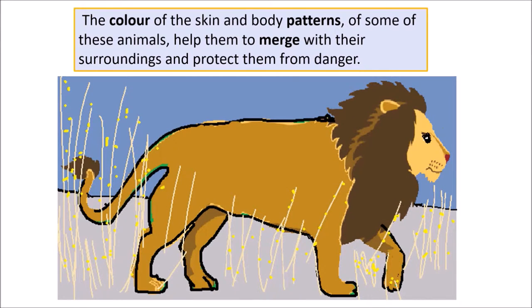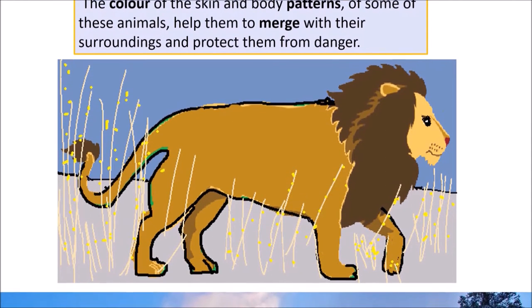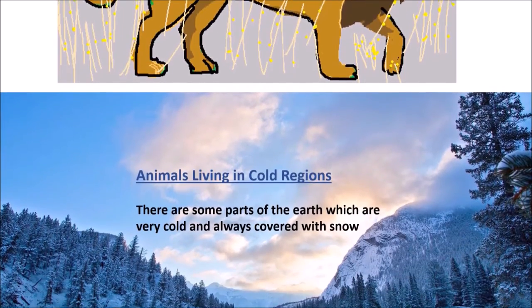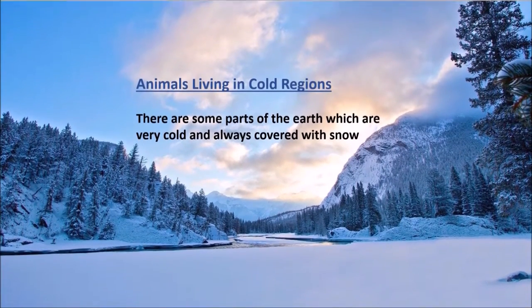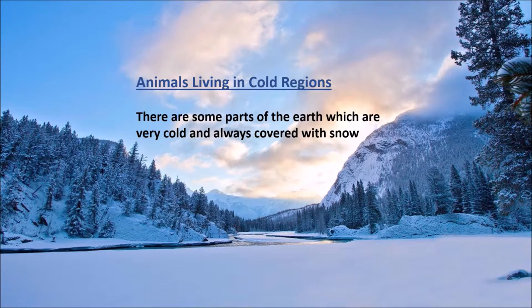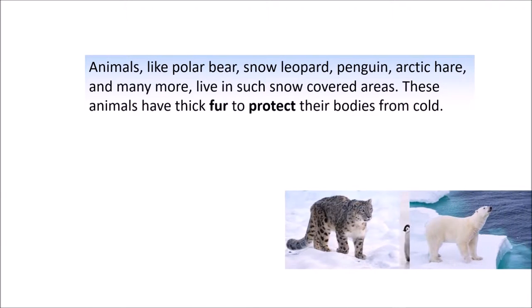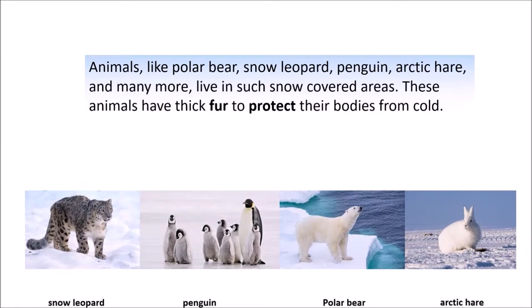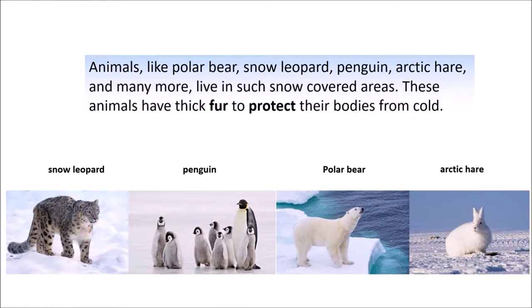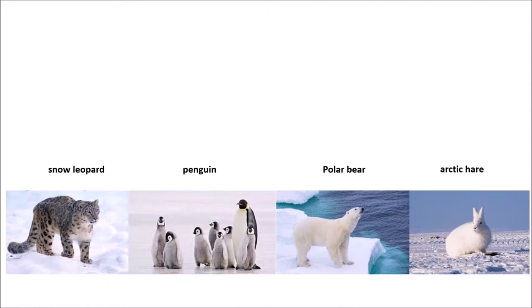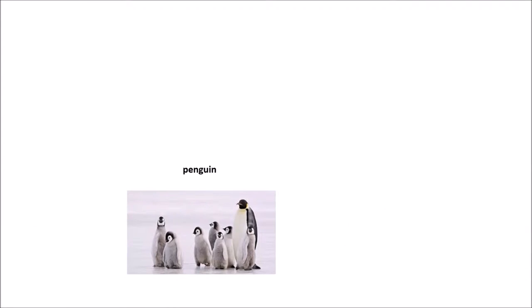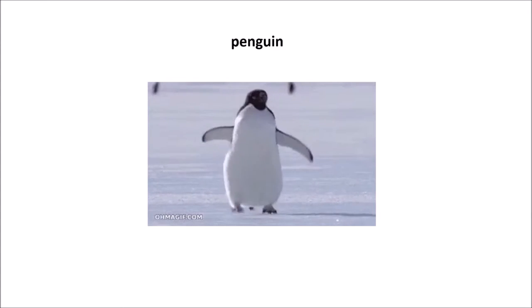Next, animals living in cold regions. There are some parts of the earth which are very cold and always covered with snow. Animals like polar bear, snow leopard, penguin, arctic hare, and many more live in such snow-covered areas. These animals have thick fur to protect their bodies from cold. I wonder if I will get to see any of these animals in real — especially penguin. Oh my, just awesome!